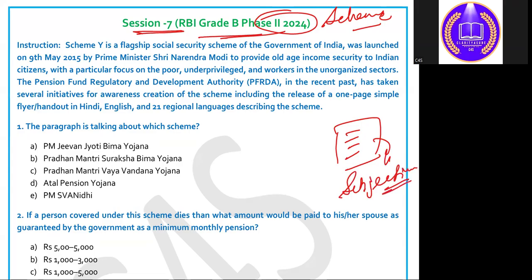The questions generally asked are two-mark questions — instruction-based or paragraph-based. After reading a paragraph, you are given four or five questions and need to solve them based on the information given in the paragraph as well as other related information. Now, the scheme described is a flagship social sector scheme of the Government of India, launched on 9th May 2015. Let's understand the other clues to decode the scheme.